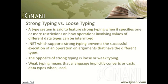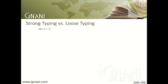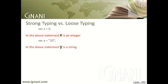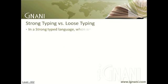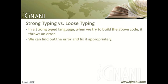Consider an example to demonstrate weak typing using the variant data type. Var x equals 5 — in this statement, x is an integer. Var y equals 10 — in this statement, y is a string. When we execute x plus y, the result differs between strong typed and weak typed languages. In a strong typed language, when we try to build the above code, it throws an error and we can find and fix it appropriately.